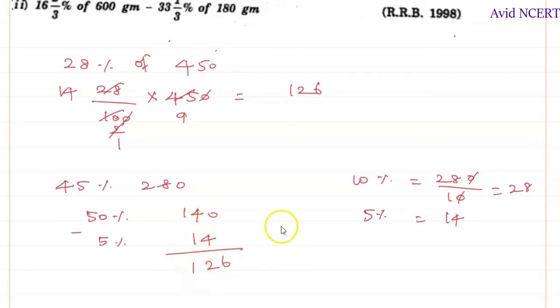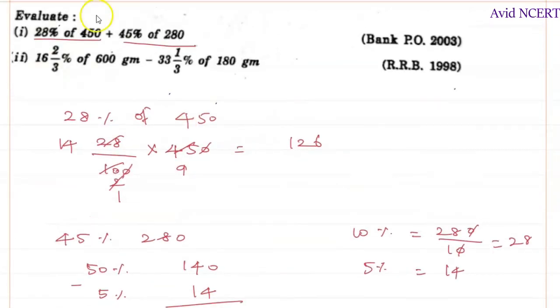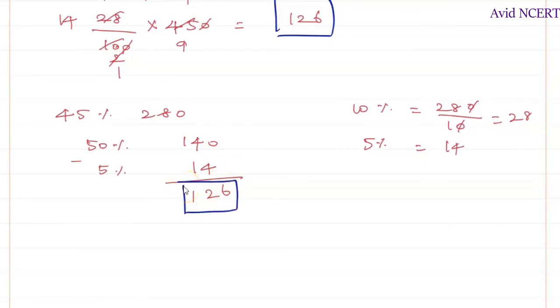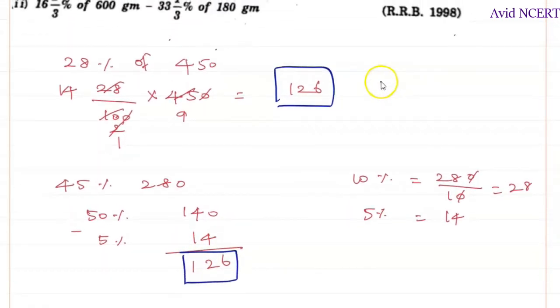So 126. We can just add these together. The question is 28% of 450 and 45% of 280. 28% is 126 plus this one is 126, so we add 126 plus 126, which equals 252. You can follow any of these two methods to find the percentage of this amount.